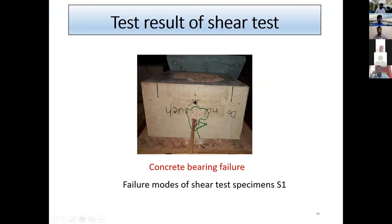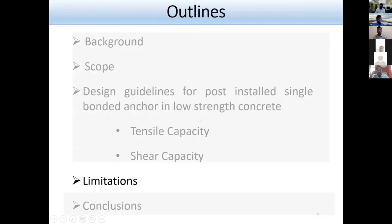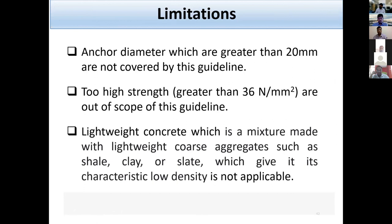The shear test photo shows that concrete bearing failure occurred. Section 4.4 includes some limitations: anchor diameters greater than 20 mm and concrete strength greater than 36 MPa are not covered by this guideline, and lightweight concrete is also out of scope.